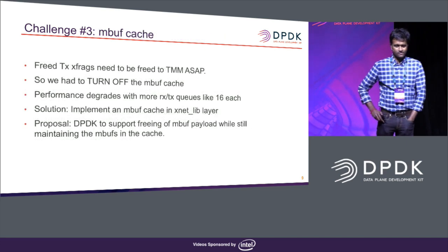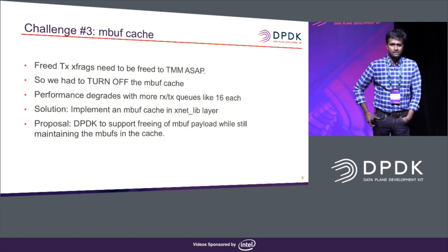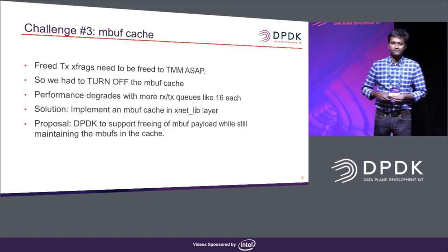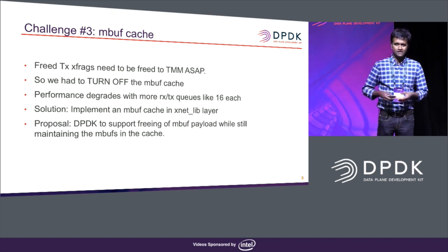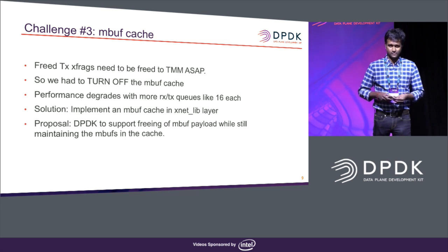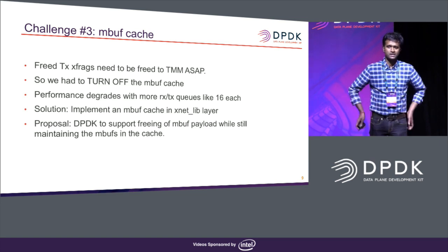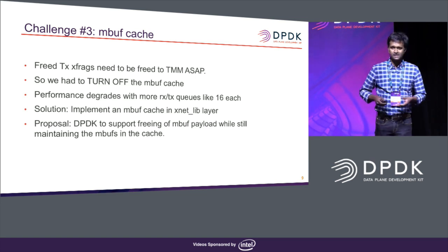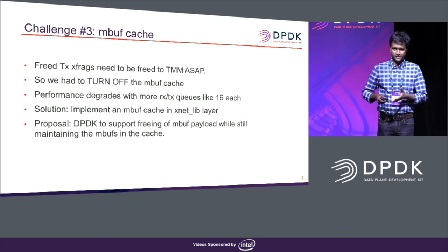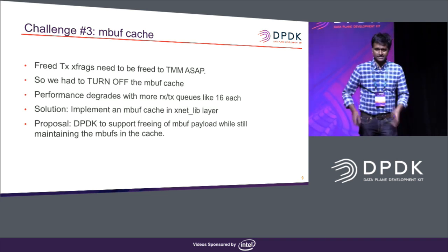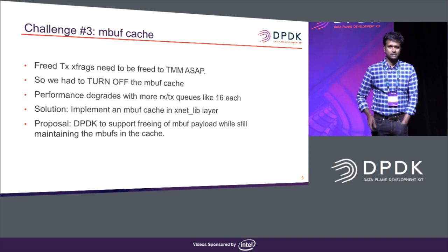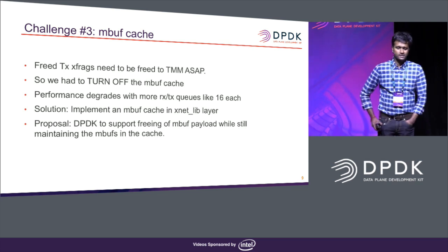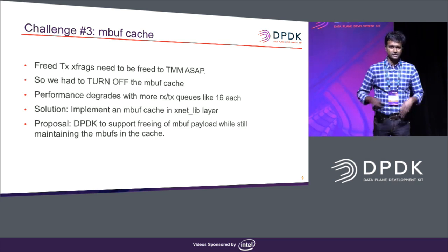The next challenge was about how memory buffers are handled — allocs and frees between DPDK and TMM. Since we use the external mempool handler and xfrags come from TMM, the mbuf cache was an issue because our stack has reference counts for the xfrags. Completed TX buffers cannot be reused for the next RX because our stack might still have reference counts for those buffers. So we had to turn off the mbuf cache, so that the mbuf's memory is freed back immediately to Xnet, which in turn immediately frees it back to TMM. TMM then looks at the reference count and decides when to free it. But turning off the mbuf cache resulted in performance degradation when testing at 16 RX and TX queues with high-throughput NICs like 100 gig.